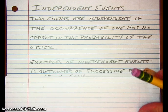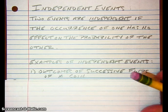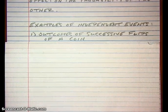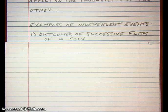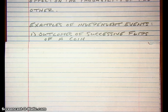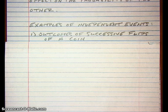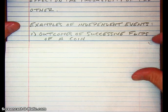Here are some examples of independent events. If you flip a coin, the outcomes of successive flips would be independent. It might come up heads one time, tails the next. Whatever happened in the past has no effect on what's going to come up on the next flip. The probability of getting heads is always 0.5, and the probability of getting tails is always 0.5, regardless of what's happened with that coin in the past.